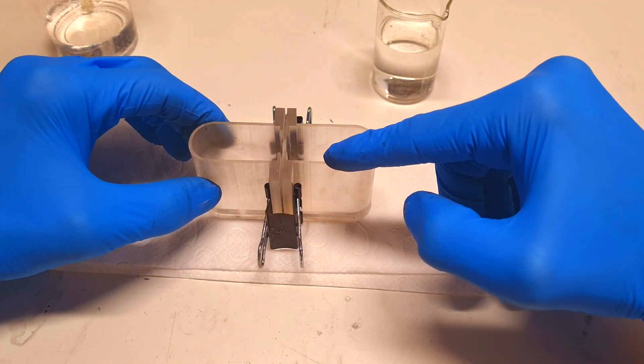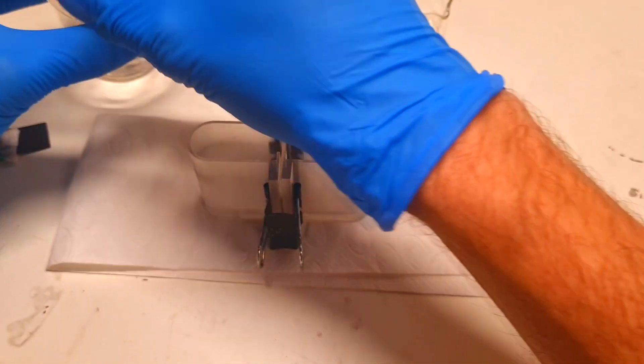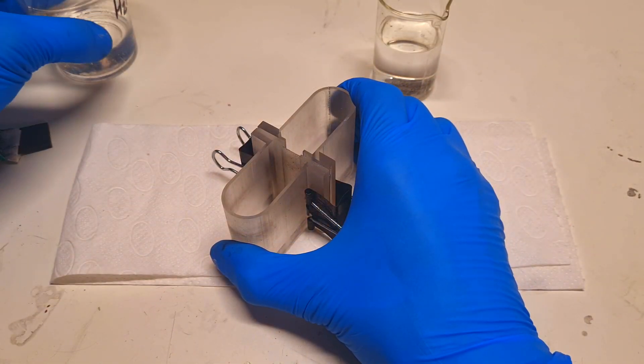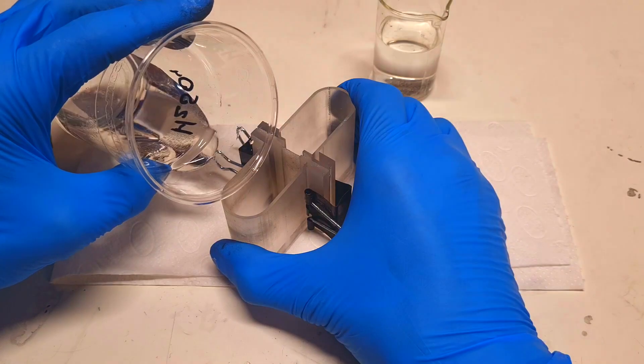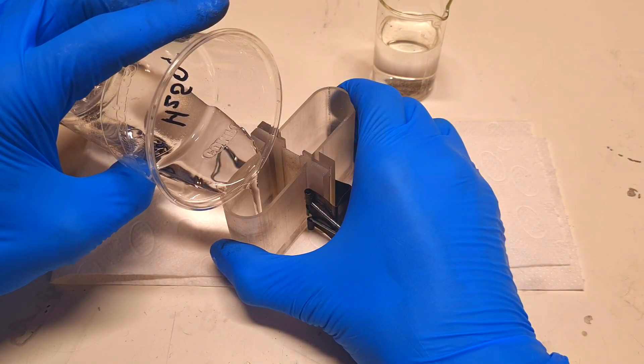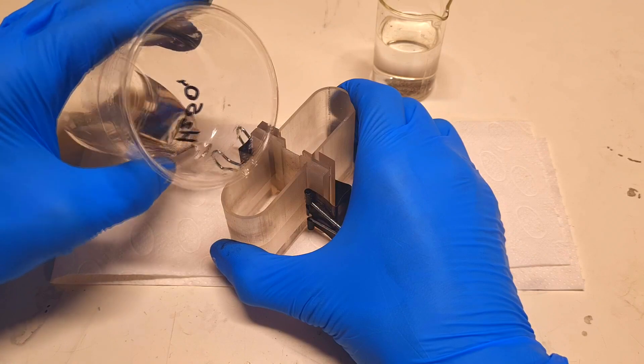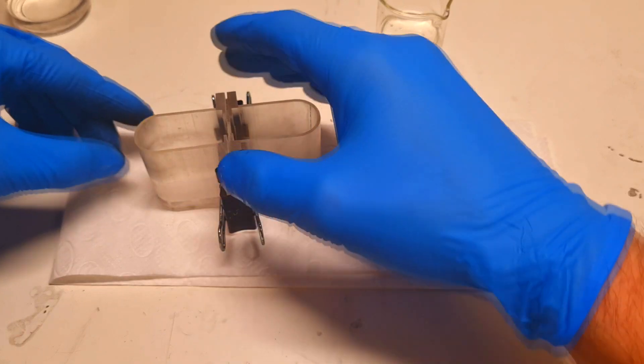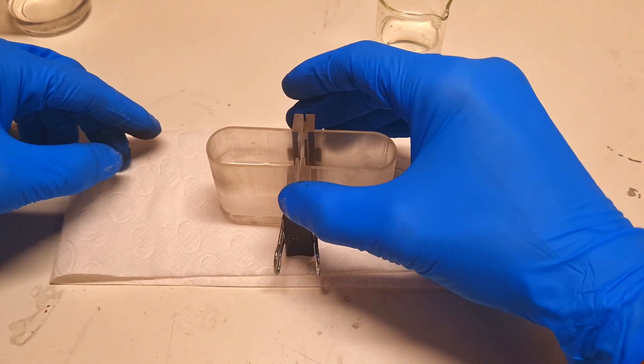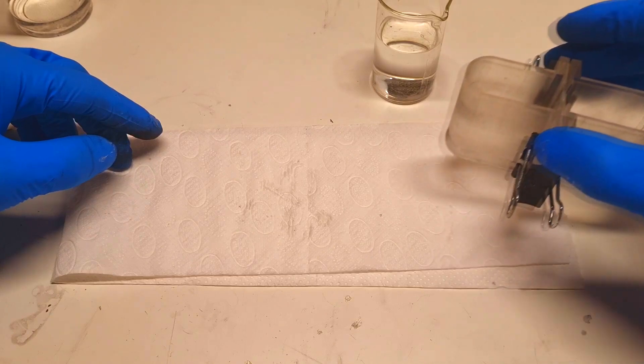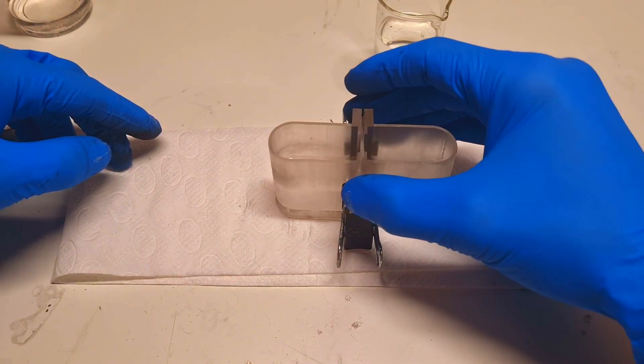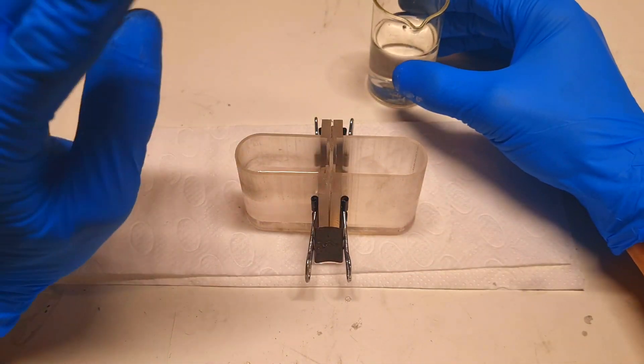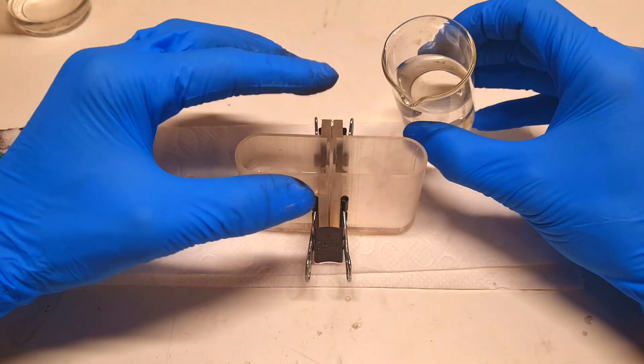So this will be the negative side and this will be the positive side. So on the positive side, I will fill with two molar sulfuric acid. So on the negative side, I will fill with one molar sodium hydroxide.